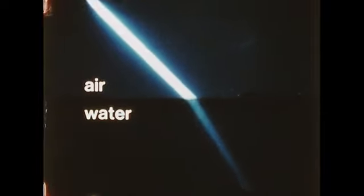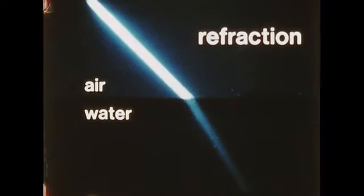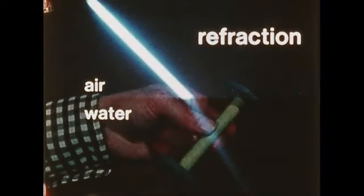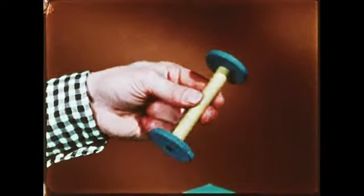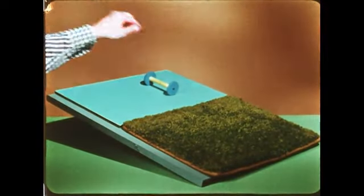The bending of light as it passes from one medium to another is called refraction. The light behaves like a set of wheels. On a smooth surface, the wheels move quickly.